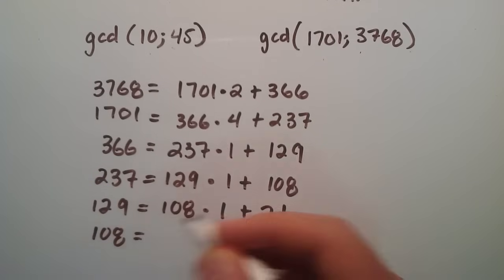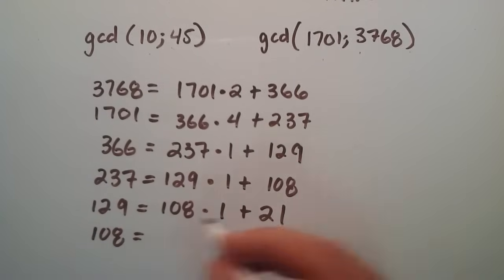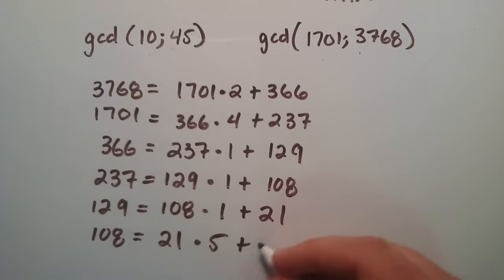108 is equal to moving the 21 over here. So 108 is equal to 21 times 5, plus 3.